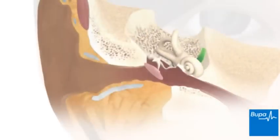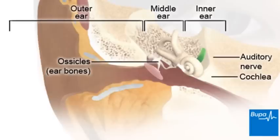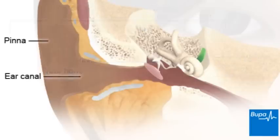To understand the cause of glue ear, it's helpful to know how the ear works. Your ear consists of three parts: the outer ear, the middle ear and the inner ear. These all work together to pass the sound from your ear to your brain.